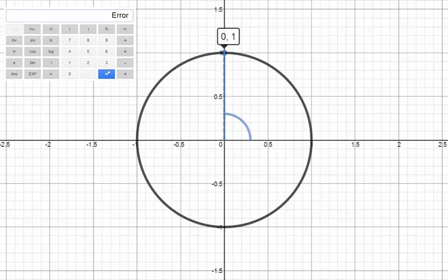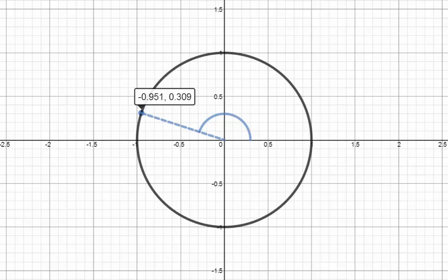In the second quadrant, you can see that the gradient will be negative, so tan of any of these angles is a negative number.